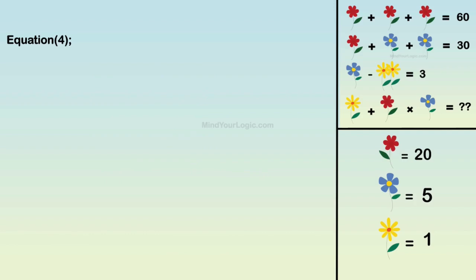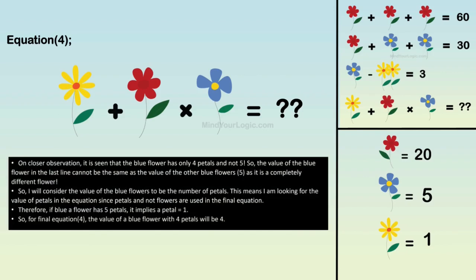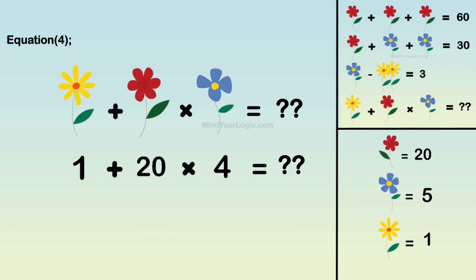Now final equation 4. Yellow flower plus red flower multiply by blue flower equals question mark. Substitute the values. We get the value of the final equation as 81.